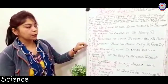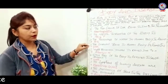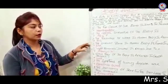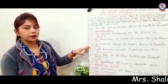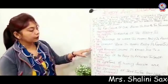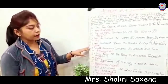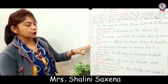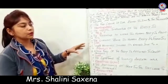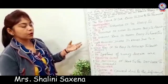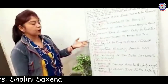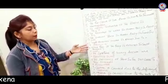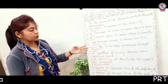Fourth one: the smallest bone in the human body is found in the ear. Fifth one: night blindness disease is caused due to deficiency of Vitamin A. Vitamin A की वजह से हमें night blindness हो जाता है.